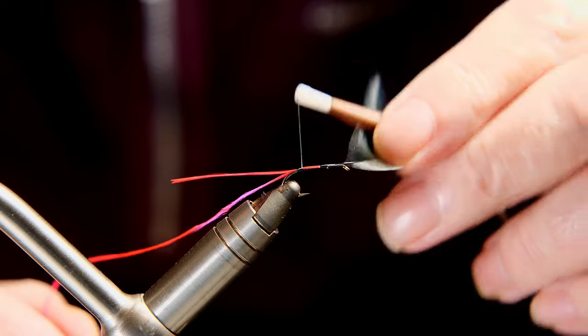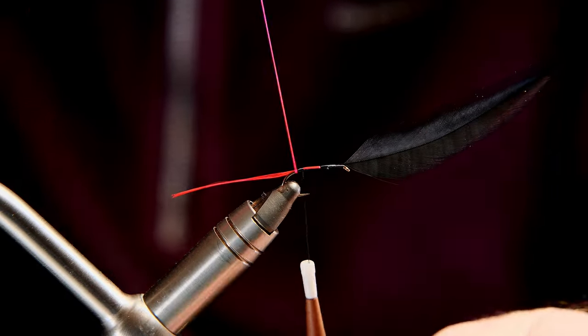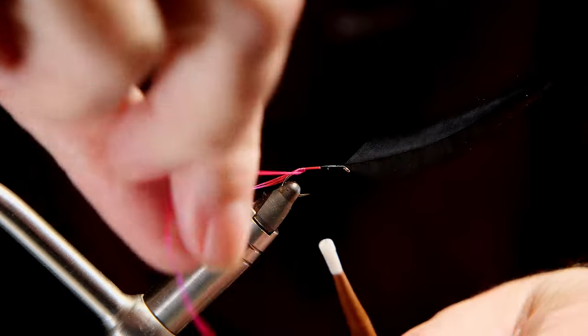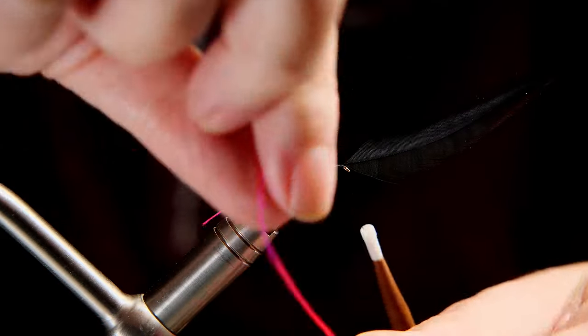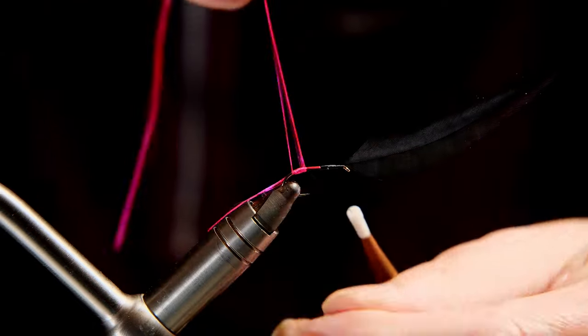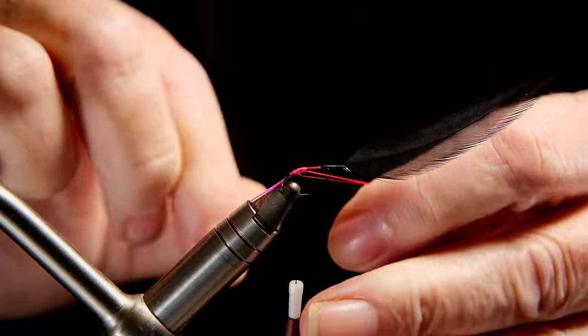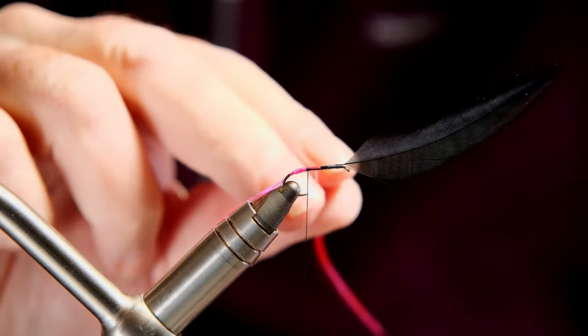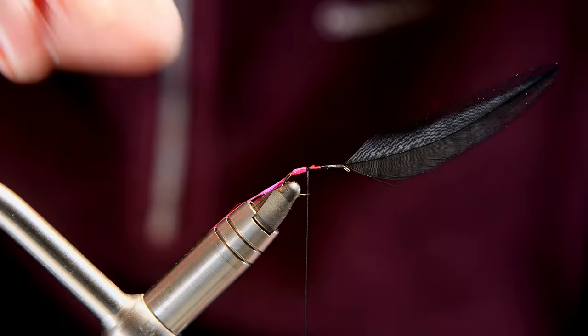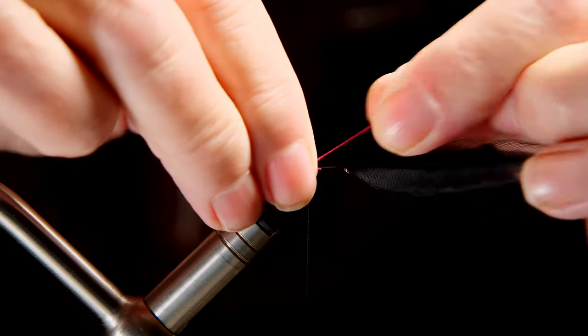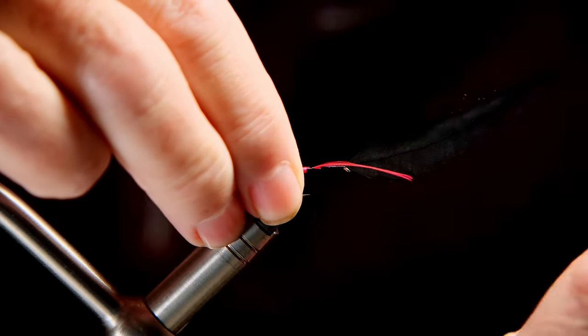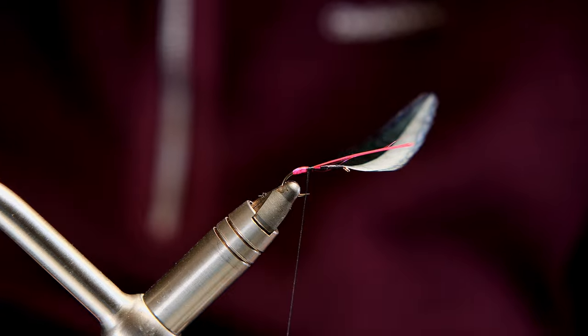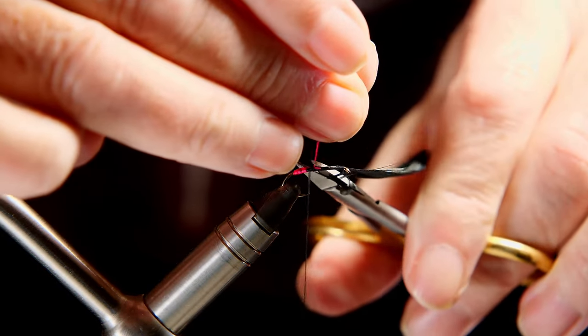And then put a few turns on top of each other. Now this stuff has an annoying habit normally of unless you sort of glue it down of unwrapping itself and ending up all down the bend of the hook. But if you relieve that tail and then fold the tail forwards, give it a bit of a pull, that will secure that tag and you can make that a reasonable size, there's nothing wrong with that at all.